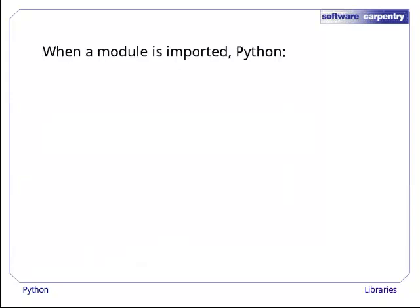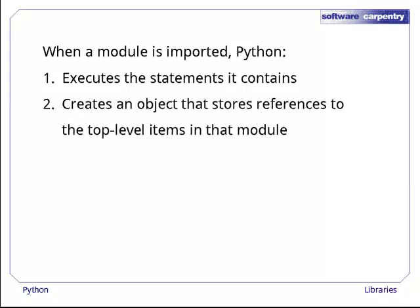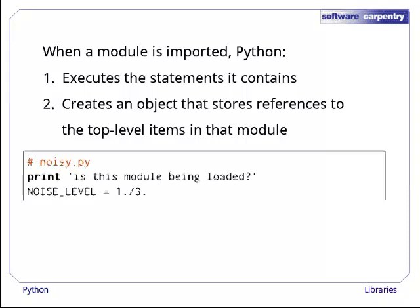A file that has been imported into another program is called a library or module. When a module is imported, Python executes the statements it contains, which are usually but not always function definitions, and creates an object to store references to all the items defined in that module, and assigns it to a variable with the same name as the module.